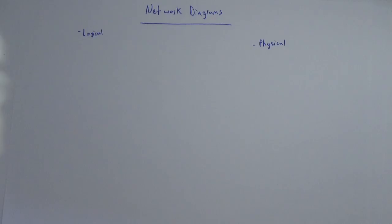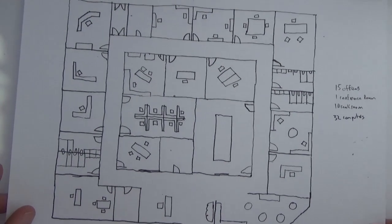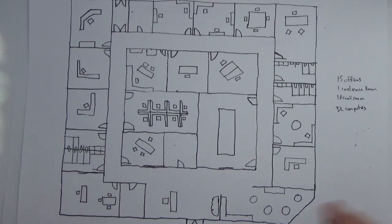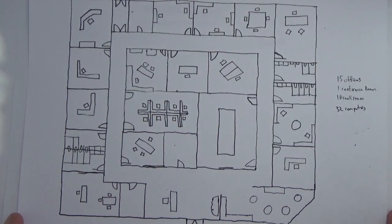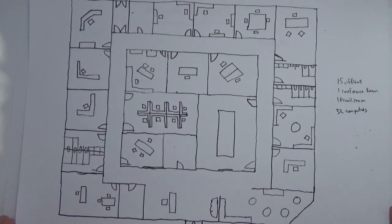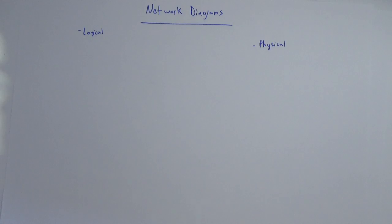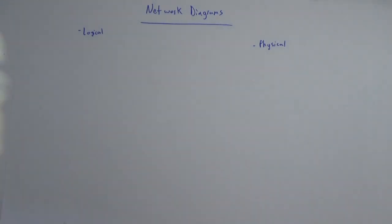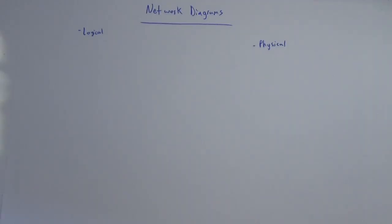A physical diagram — we looked at this when we looked at planning a network — you have a physical blueprint, and we might have all of the devices on this blueprint, which gives us a good idea of how things are related physically. If you're trying to track down where a computer, switch, or cable is, that's where physical diagrams come in handy. Logical diagrams, on the other hand, are useful for determining how things are logically connected.